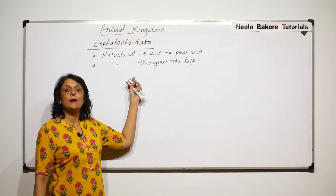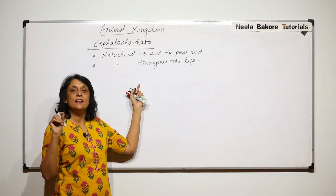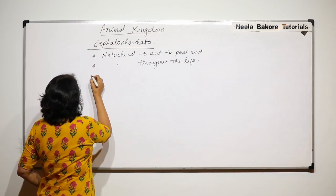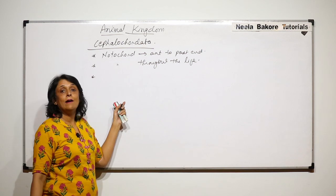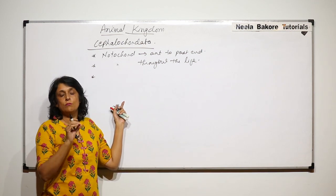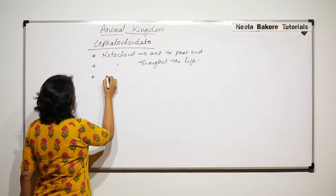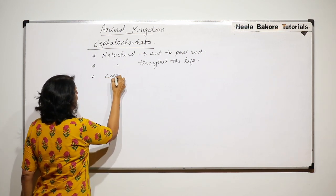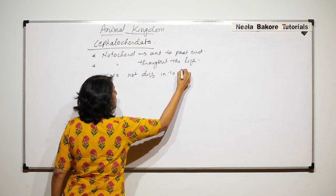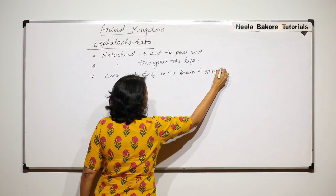In case of cephalochordates, the notochord is present from anterior to posterior end and it remains throughout the life. Cephalochordates have a nervous system, but it is not clearly differentiated into brain and spinal cord. So the CNS is not differentiated into brain and spinal cord.